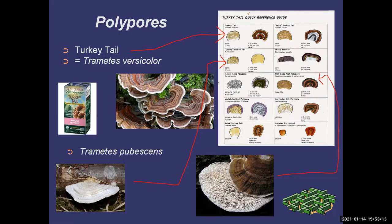There have been clinical trials with turkey tail. One was done in women with breast cancer, and they found it extended their survivability — it didn't cure them, but it made them more responsive to chemotherapy, probably because it was stimulating their immune system to recognize and attack the cancer cells, whereas before the turkey tail the immune system was run down from the cancer.